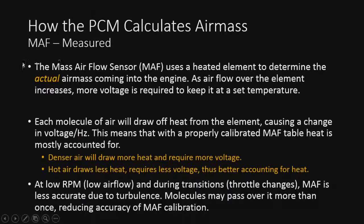Okay, so first we're going to talk about the MAF, the Mass Air Flow sensor. The operation, how it works, is actually going to kind of reveal to us exactly what's going on with air mass and why this is very accurate. So it uses a heated element to determine the actual air mass coming in the engine. Denser air will draw more heat and require more voltage. Hot air draws less heat and will require less voltage. The only real downfall is the backflow or turbulent air. But other than that, the MAF is extremely accurate.